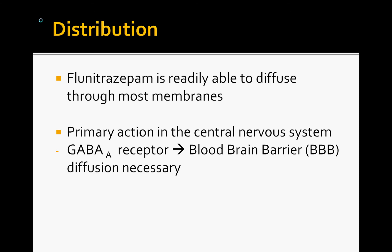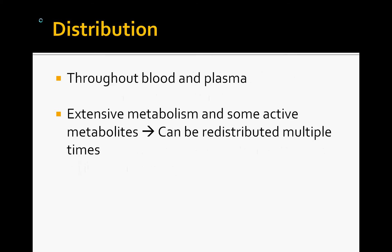Based on those facts, flunitrazepam is able to diffuse across most membranes. This includes the blood-brain barrier, as its primary location of activity is in the central nervous system. It's distributed throughout the blood and the plasma. It's metabolized extensively and there are some active metabolites, meaning flunitrazepam can be distributed multiple times to exert its effects — whether in an unmetabolized form or in an active metabolized form, though to a lesser degree as an active metabolite.